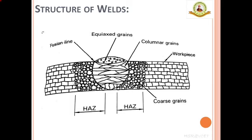In the heat affected zone, coarse grains are formed as a result of overheating. Welding makes use of intense heat to melt the edges of the workpiece material, but the portion of the base metal adjacent to those edges also gets heated to varied temperatures. As a result, these portions experience changes in microstructure and mechanical properties. The extent and magnitude of the change depends primarily on the type of base metal and the amount and concentration of heat input. Thus, the heat affected zone is defined as the portion of the base metal which has not been melted but whose microstructure and mechanical properties have been altered due to the heat of welding.